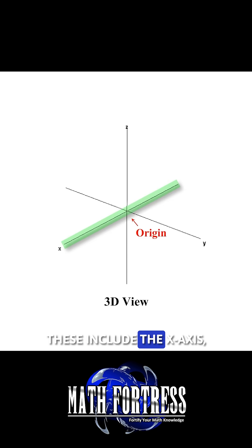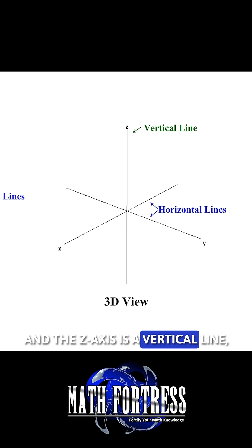These include the x-axis, y-axis, and z-axis. For the most part, the x and y-axis are horizontal lines and the z-axis is a vertical line.